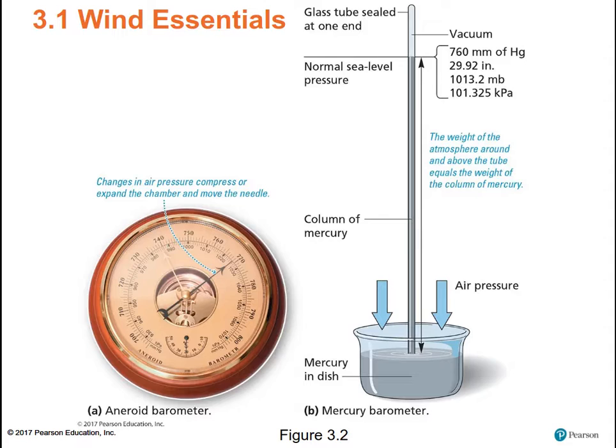When air pressure is lower, the weight of the mercury in the tube is going to be lower because there's less weight of the atmosphere pressing down on the surface of the mercury. The other two measurements of air pressure are 760 millimeters of mercury, which is equal to 29.92 inches of mercury. In that case, instead of actual pressure, we're looking at the weight of a column of mercury and comparing that with the weight of the atmosphere.